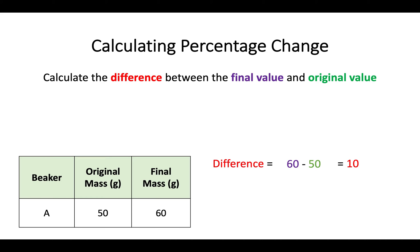So with this difference of 10 we now need to divide that difference by the original value. So what we're really doing here is we're comparing that difference between what the original value actually was. Has it went up or down, if so by how much. So again in this example here we have a difference of 10 but we're going to divide it by 50 which was the original mass. Once you do that you end up with a value of 0.2.